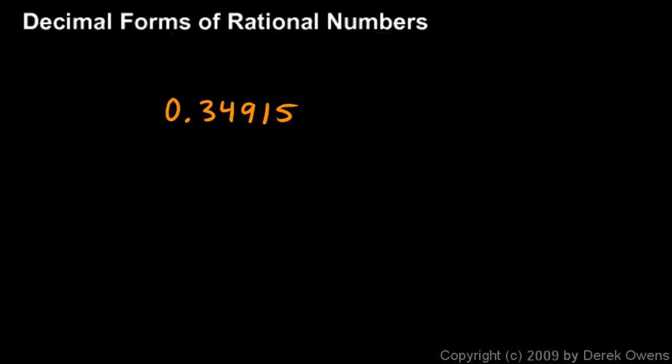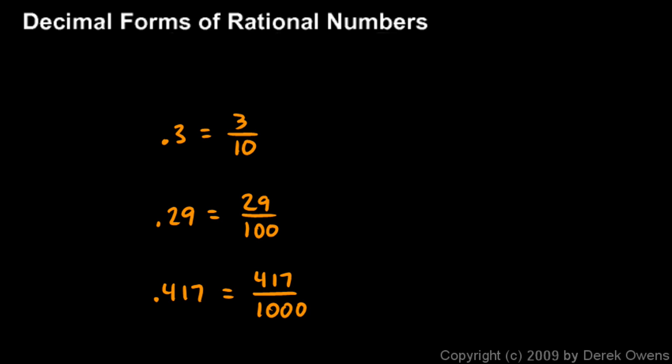So if we just had point three, that would be three tenths because that's what that first decimal place means. If I had point two nine, that would be twenty nine hundredths. If I had point four one seven, that would be four hundred and seventeen thousandths.